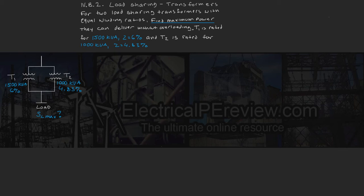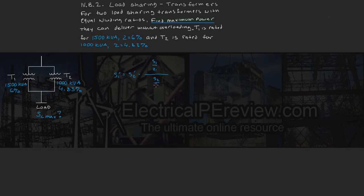First, we have to figure out which transformer would overload first if the other is at full load. We can start by writing our equations that relate S1' to S2'. Transformer 1's power contribution S1' equals S2' times the fraction of (S1/Z1) divided by (S2/Z2).